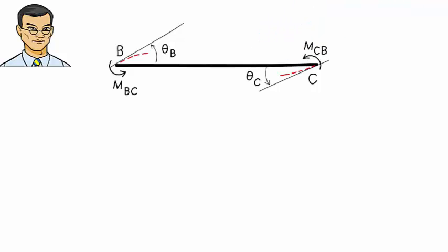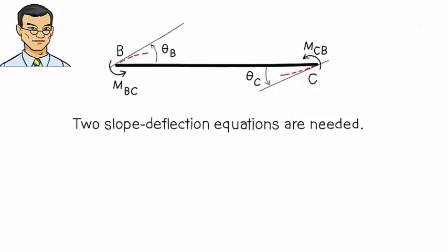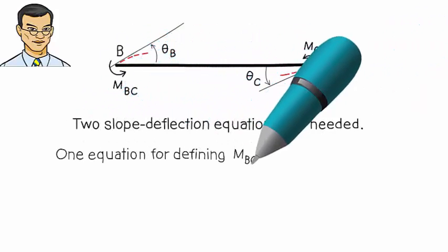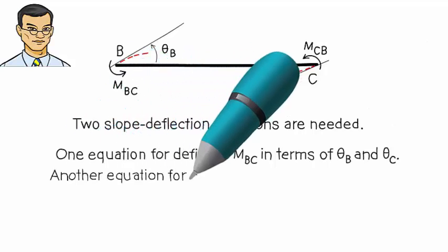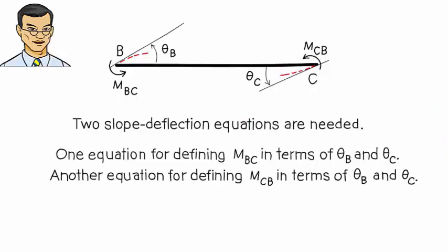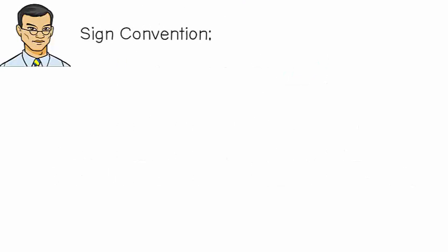The slope deflection equations define the mathematical relationship between these rotations and bending moments. More specifically, there are two slope deflection equations for the segment. One equation for defining MBC in terms of rotations theta B and theta C, and another equation for defining MCB in a similar manner. Before we start developing the slope deflection equations, let's pick a sign convention for member end moments and rotations.